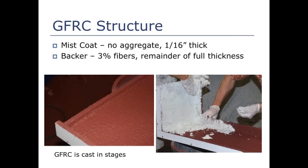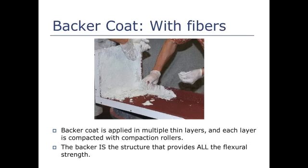GFRC is basically two parts. There's the structural part called the backer — that's really what GFRC is: glass fiber reinforced concrete. To make sure the backer looks nice — because the fibers are so big and there are so many they show — we put a veneer over it, often a mist coat, which is very thin. In commercial GFRC it's often a millimeter or less. It's just there to hide the backer. The part you see that's decorative has no fibers in it — it's not the structure. It's the backer that is the GFRC. The backer has the fibers, does all the work, has the flexural strength. That's what gives you the properties you want.